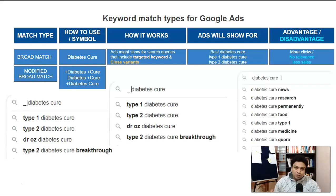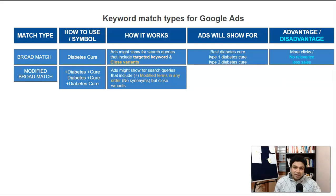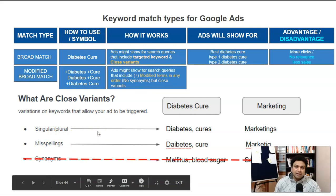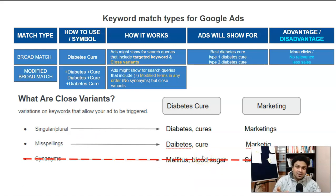Modified broad match works similarly to broad match — it will trigger your ads to many keywords in any order. But there is one key difference: this time there are no synonyms. In broad match it triggers synonyms too, but with modified broad match the close variants like singular, plural, and misspellings are still there, but no alternative synonym words, because you've given more specific instructions.